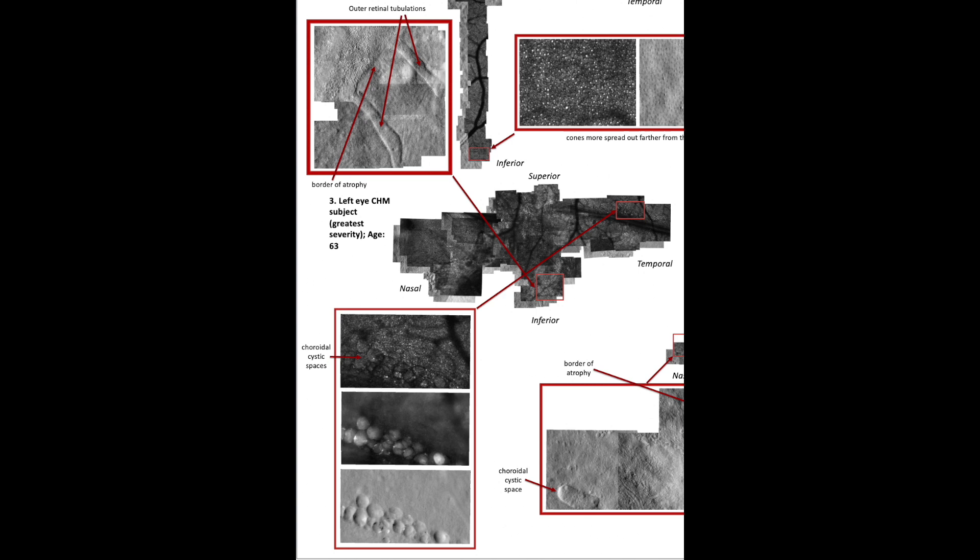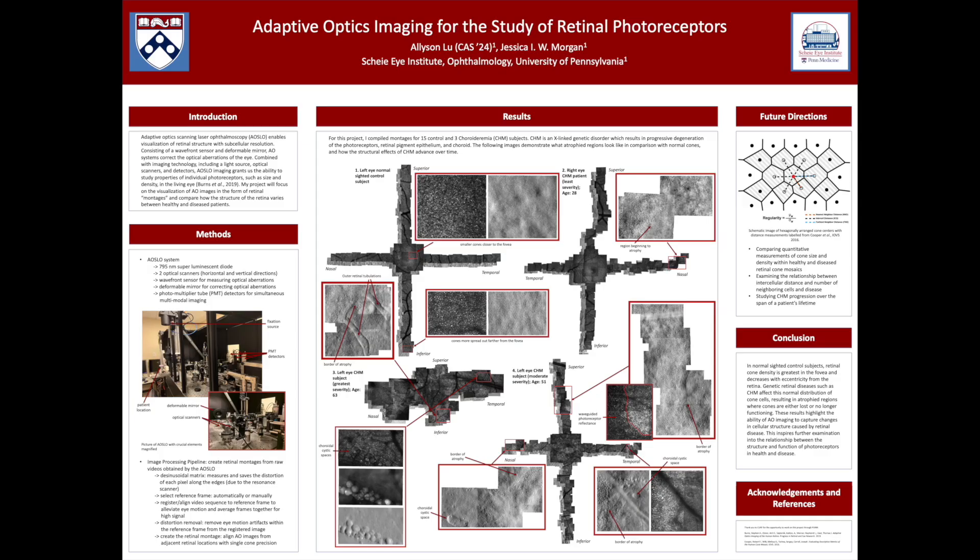This signals end-stage degeneration for the retina in those specific regions, and these results demonstrate how CHM becomes more severe over time.